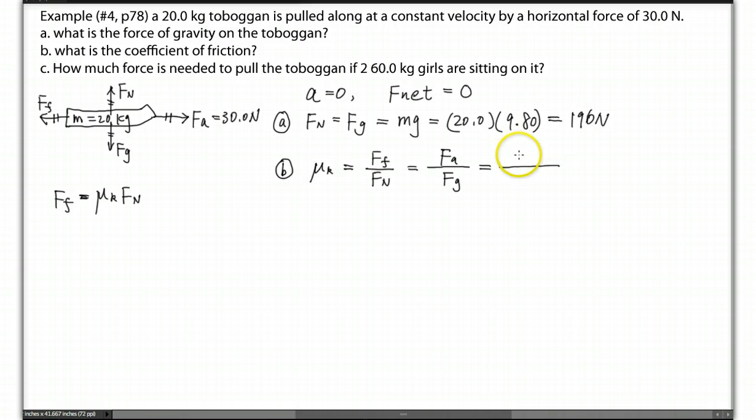So the Fa should be 30.0 newtons, and then Fg is 196 newtons. And then if you do the division, you can find it's 0.153. That's it. There's no unit for it.